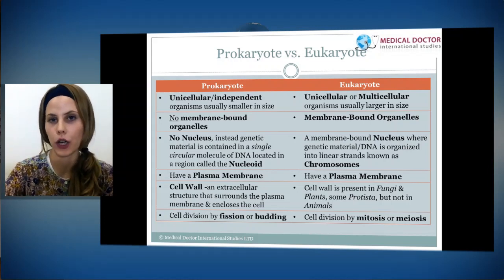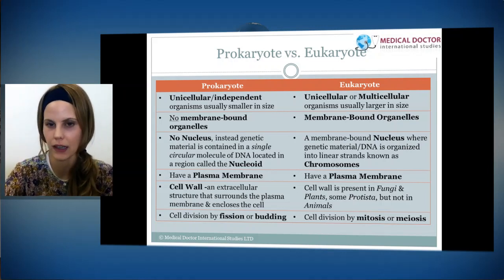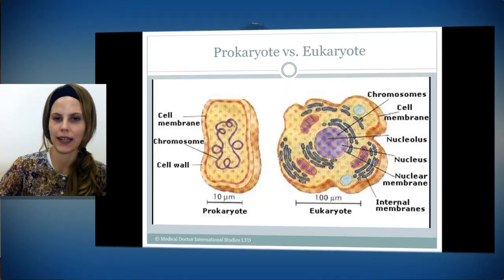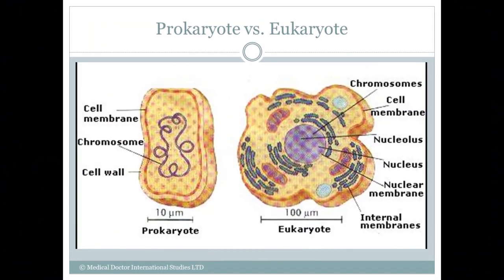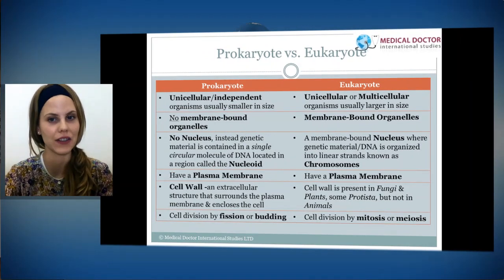Let me explain what membrane-bound means. Looking at this picture, you can see many different things going on inside this eukaryote cell — circular structures, and this nucleus we're going to speak about. A lot of things are enclosed — that's membrane-bound, meaning they're enclosed by a membrane. Inside the prokaryote cell, there are no membrane-bound organelles. You see this big circular string, which is actually chromosomes. So prokaryotes have no membrane-bound organelles, and eukaryotes have membrane-bound organelles.